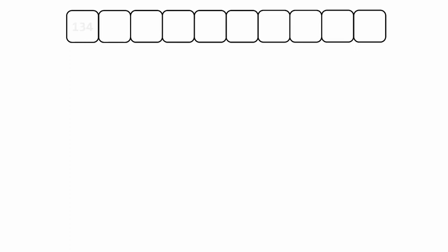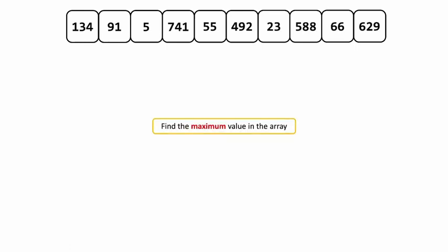Here we're going to have an array of 10 digits, and the first thing we have to do is find the maximum value in the array. In this array, 741 is the maximum value. This means we're going to have to iterate three times.